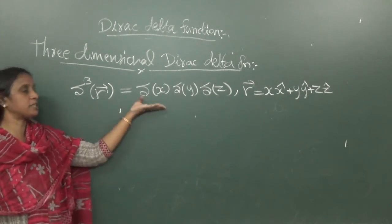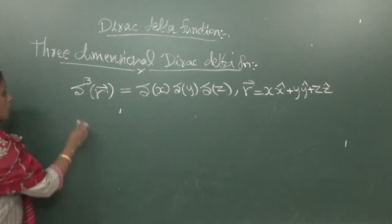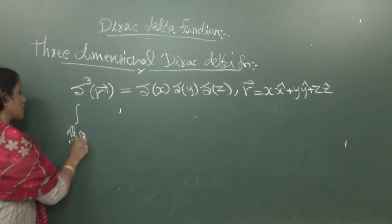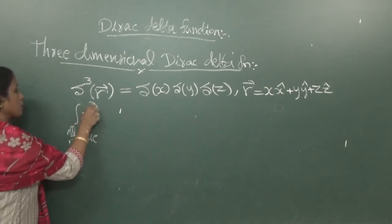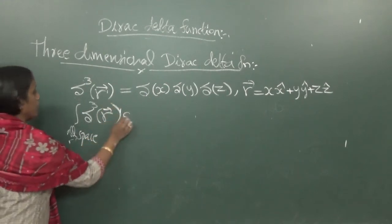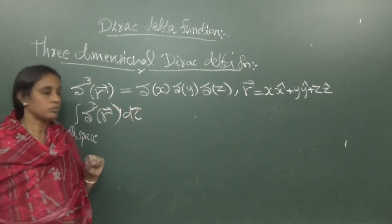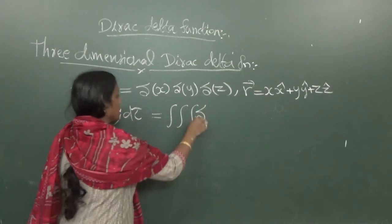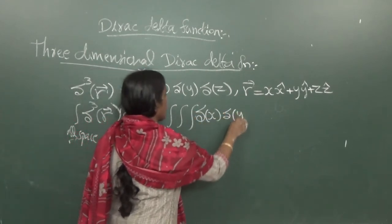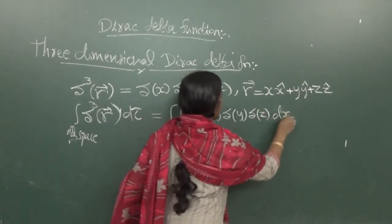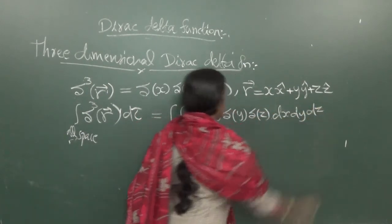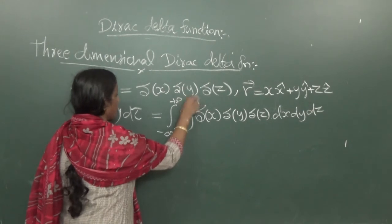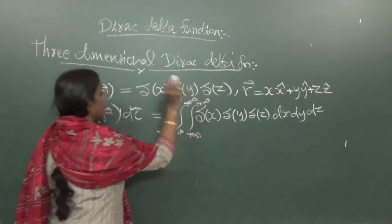This is the three-dimensional Dirac delta function. Now you can define its area under the curve: the integration over all space of δ³(r) d³r equals the integration of δ(x) δ(y) δ(z) dx dy dz, with limits depending on the coordinate system you use.